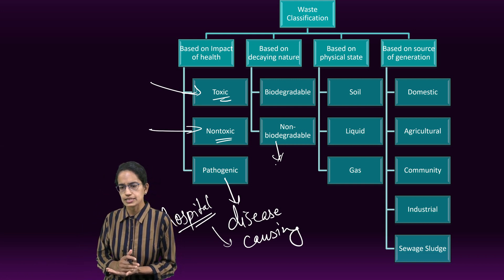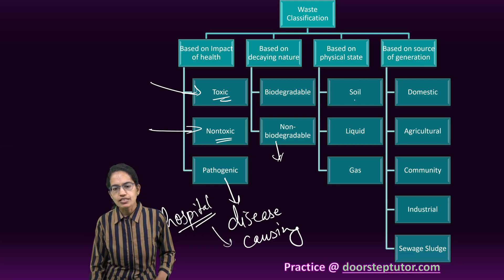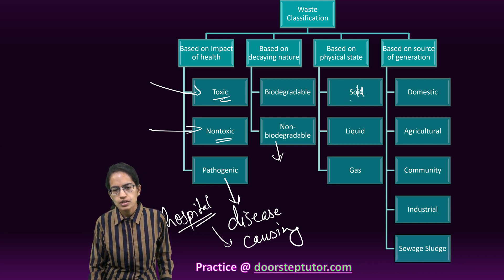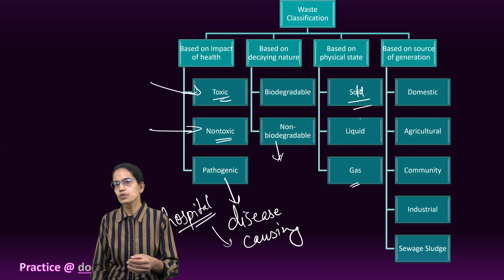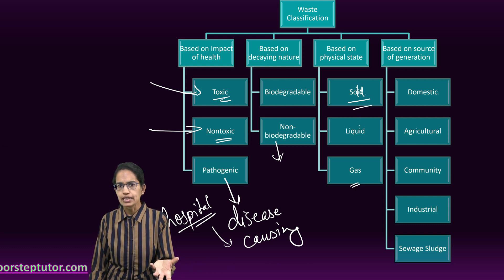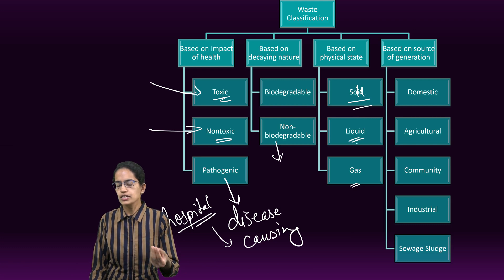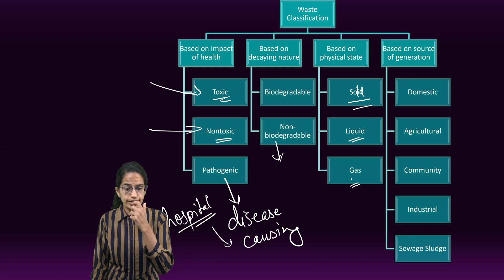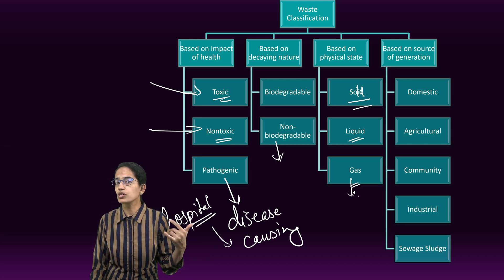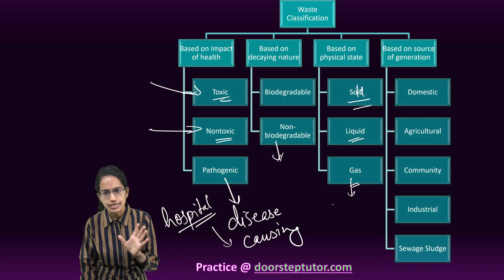The next classification is based on the physical state. Waste can be classified as solid, liquid, and gas. Solid waste would include plastic and metal. Liquid waste includes sewage and sludge. Gaseous waste includes carbon dioxide, carbon monoxide, nitrous oxides, and fly ash — all examples of gaseous waste.